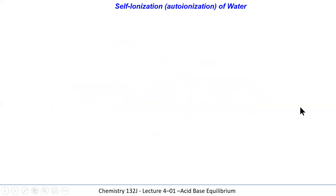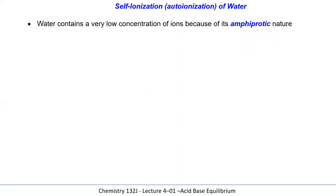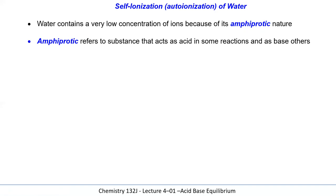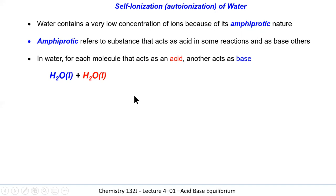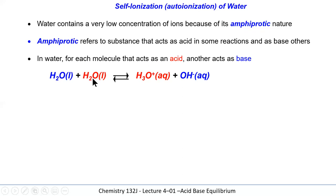Now the self-ionization of water: water can act as both acid and base depending on what is placed in it. We call substances that can act as both acids and bases amphiprotic. In this color-coded example, the blue water molecule is losing a hydrogen and becoming hydroxide — it is the acid, and hydroxide is its conjugate base partner. The red water molecule is accepting the proton, so it is classified as the base.